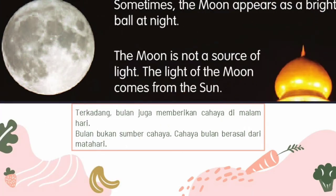Sometimes — terkadang — the moon appears as a bright ball at night. Bulan juga memberikan cahaya di malam hari. The moon is not a source of light. Bulan bukan merupakan sumber cahaya. The light of the moon comes from the sun — berasal dari matahari. Jadi teman-teman ingat ya, bulan bukan sumber cahaya karena dia memperoleh cahaya dari matahari.